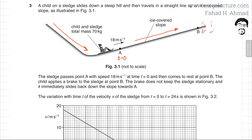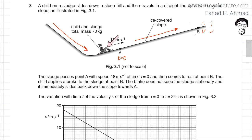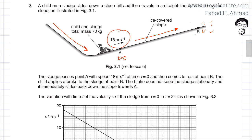In the following question, a child on a sledge slides down a steep hill and then travels in a straight line up an ice-covered slope as illustrated in figure 3.1. The child and the sledge are sliding down the slope, and then the momentum carries them up the ice-covered slope. At t equals 0, they pass point A, where the sledge has a speed of 18 meters per second.